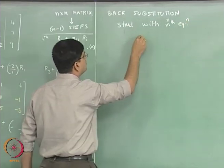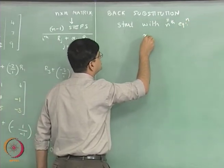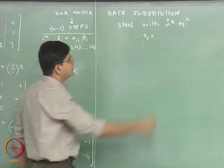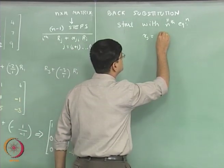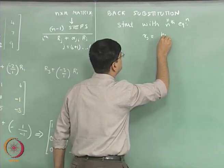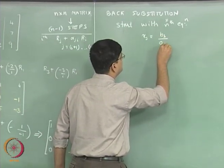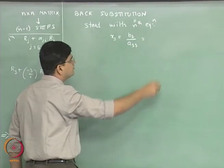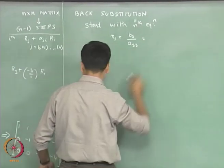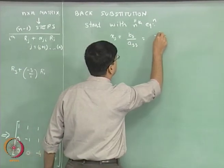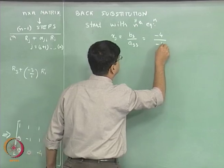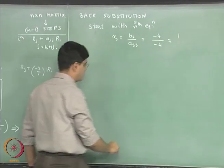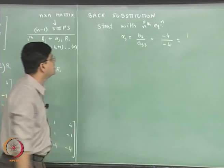Our x_n — in this case x_3 — is going to be equal to b_3 divided by a_33, which is just minus 4 divided by minus 4, which is equal to 1. So that is the first step in back substitution.